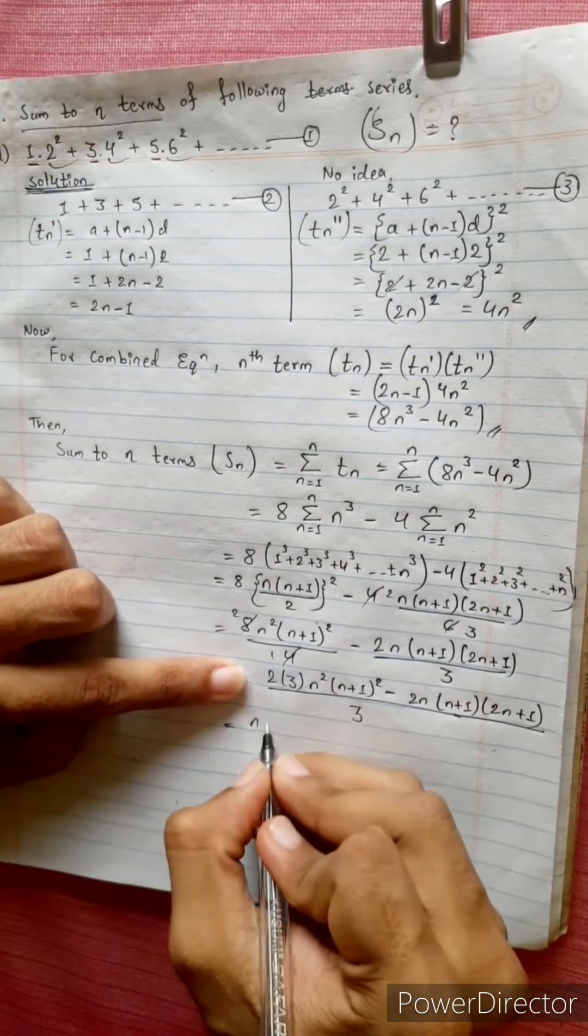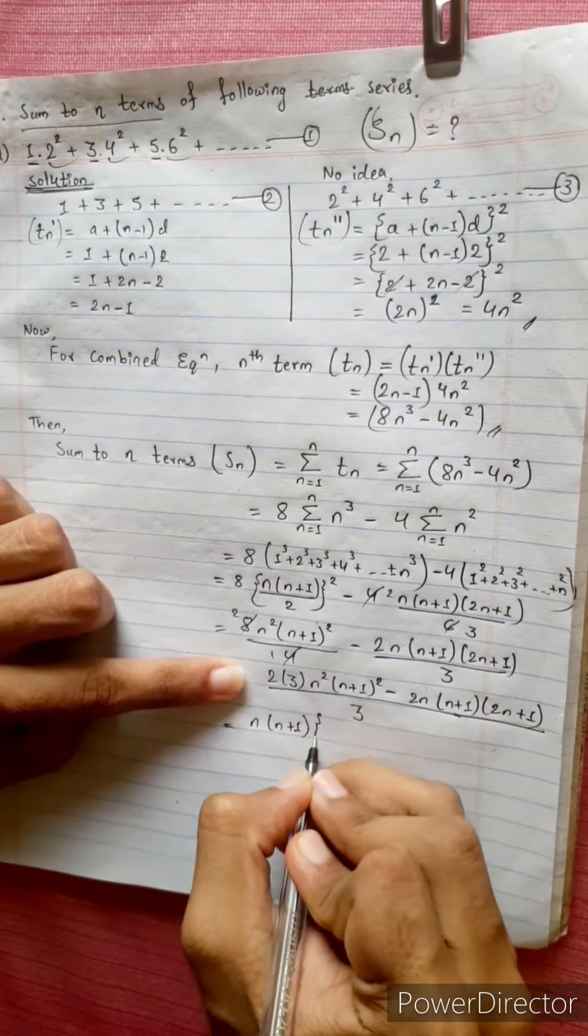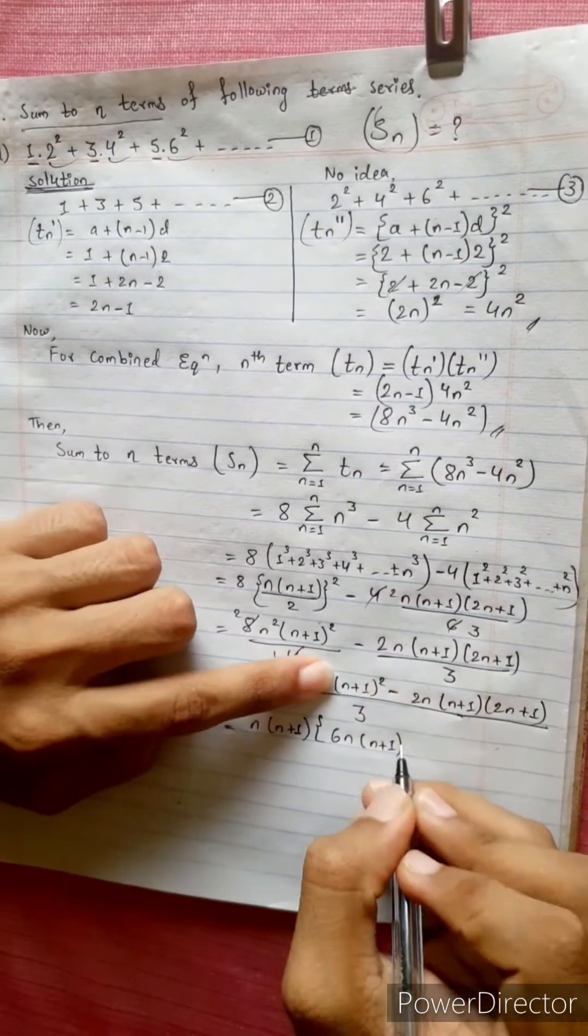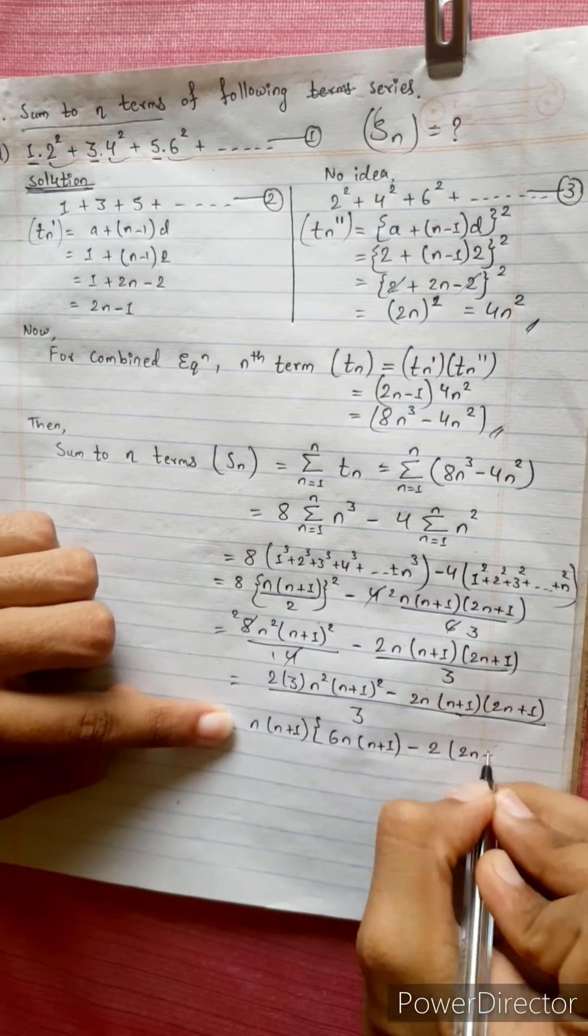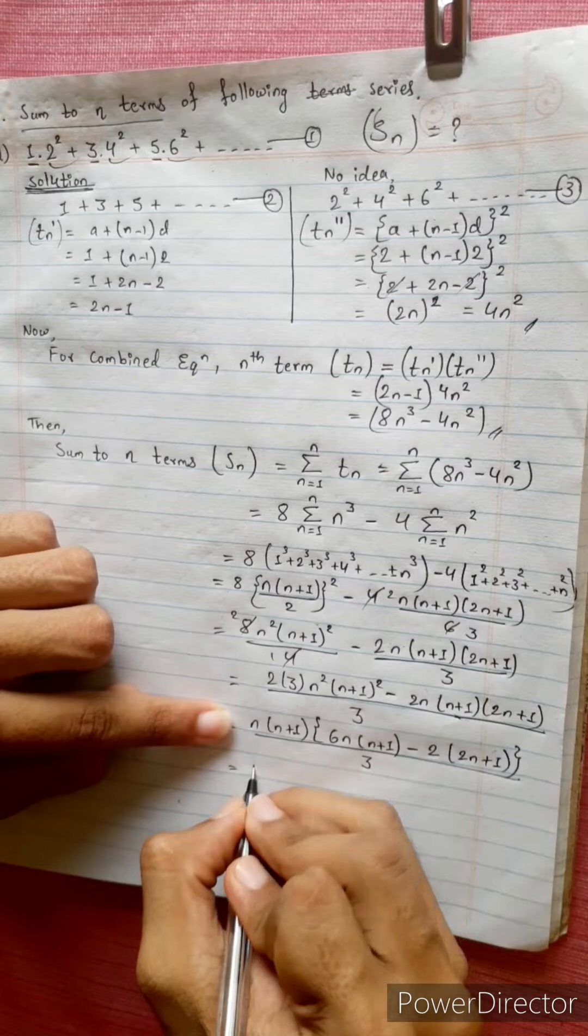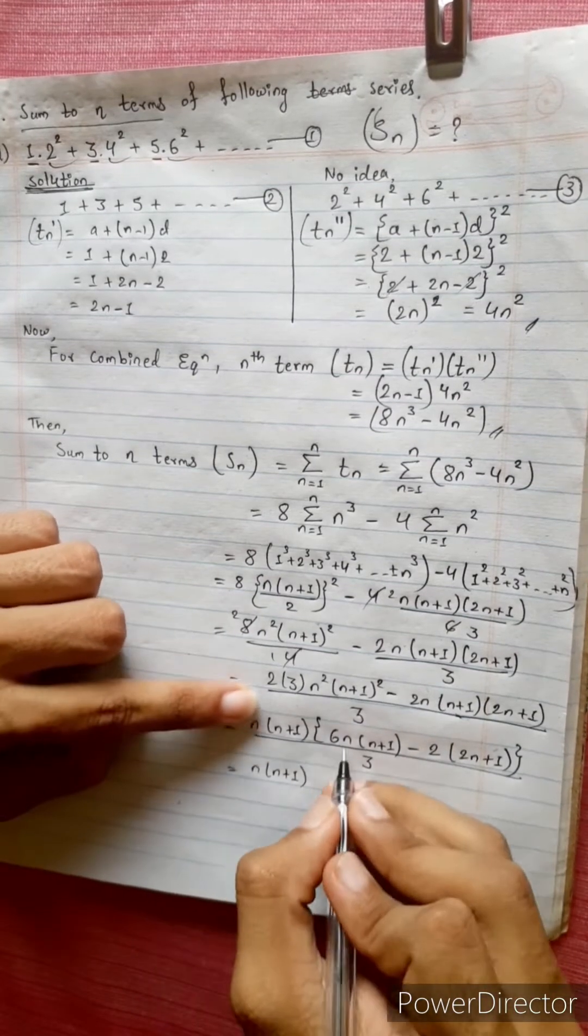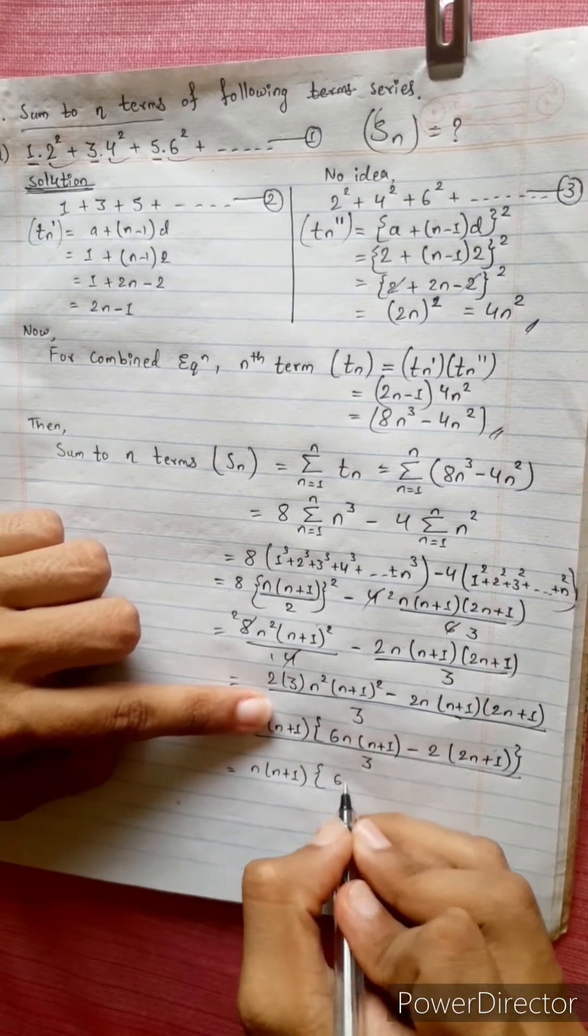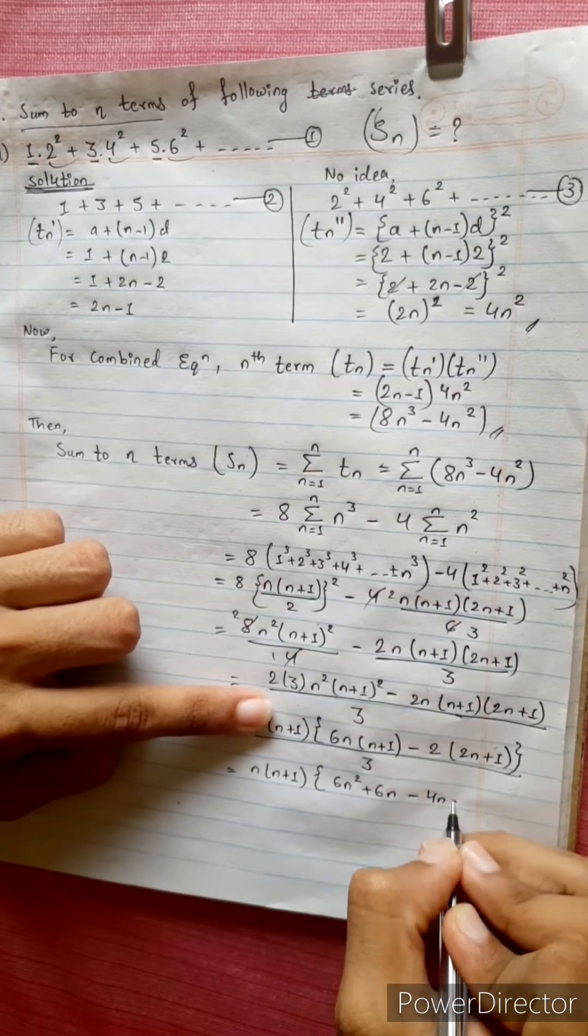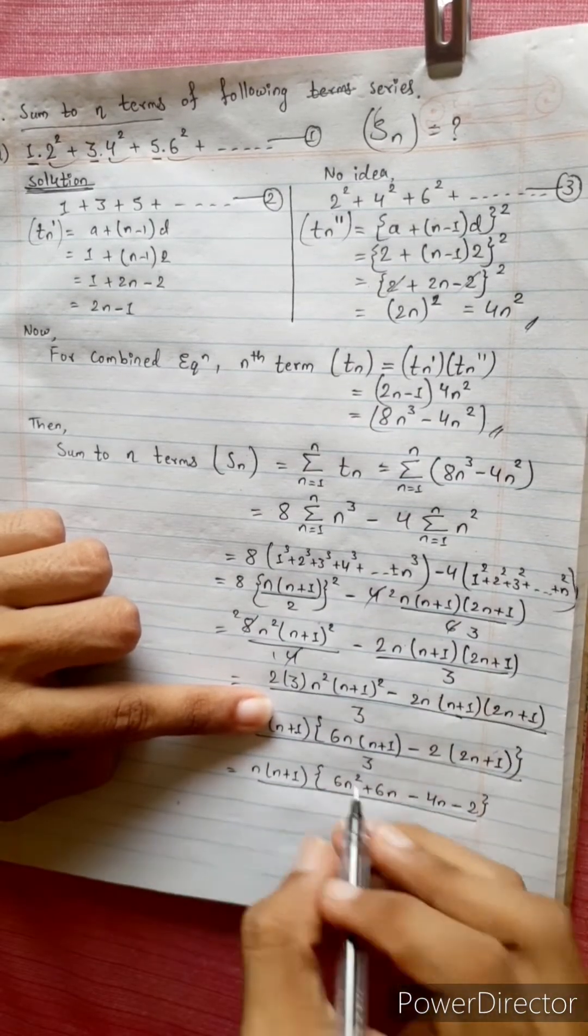Taking common n times n plus 1, remaining terms: over 3 times 2n times n plus 1 minus 2 times 2n plus 1, divided by 3. Equals to n times n plus 1, let's multiply: 6n square plus 6n minus 4n minus 2, divide by 3.